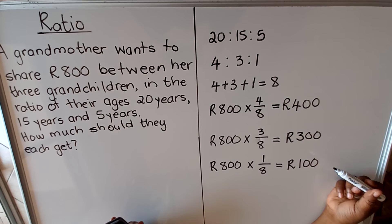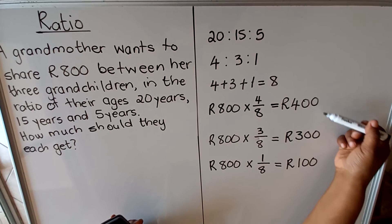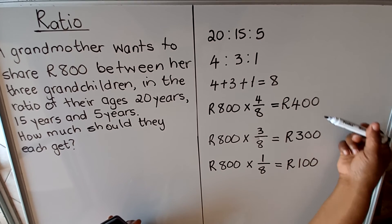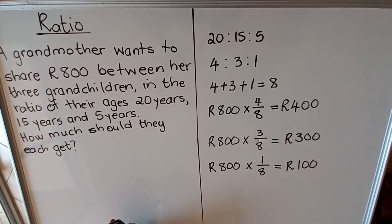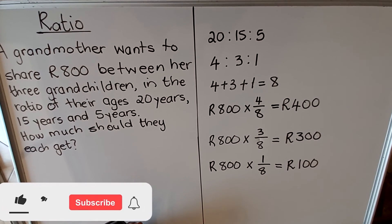Now to check if you are correct, you add all the amounts that they get. When you say 400 plus 300 plus 100, they must give you the total 800 that was there. Then it means you have done them correctly.